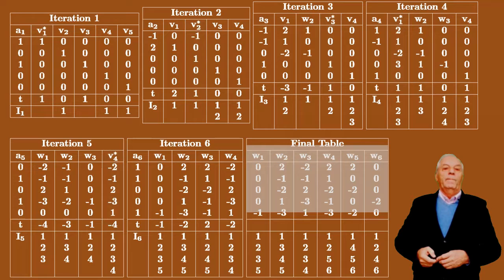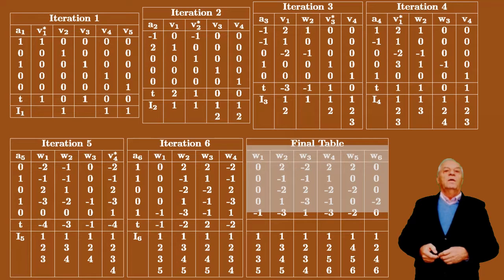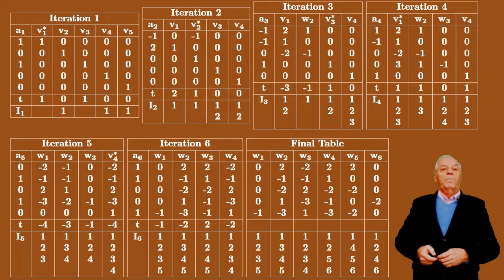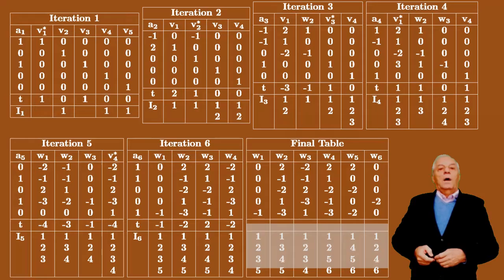Finally, we see that the generators of the dual of the dual coincide with those we started with, but in a different order. Since there is no V column, the vector space part does not exist.